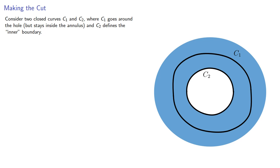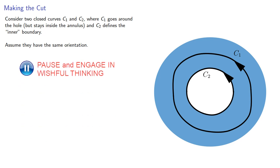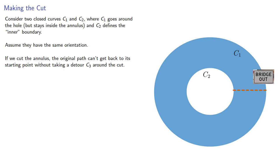We'll assume they have the same orientation—in other words, they both go in the same direction, in this case counterclockwise. If we cut the annulus, the original path can't get back to its starting point without taking a detour C₃ around the cut.